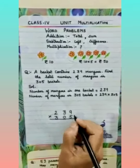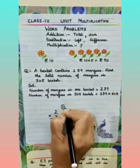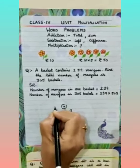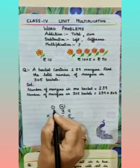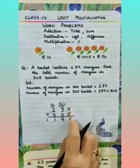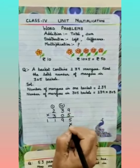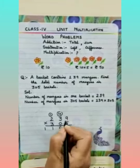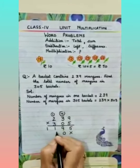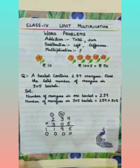Now start the multiplication. 9 fives are 45, 4 carry. 3 fives are 15 plus 4 is 19, 1 carry. 5 twos are 10 plus 1 is 11. Always write numbers one below the other. Now for the tens digit, put a cross. Any number multiplied by 0 is 0, so 0 nines are 0, 0 threes are 0, 0 twos are 0.